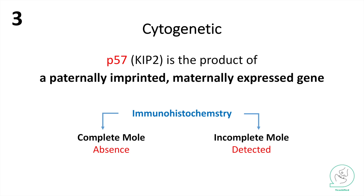Lastly, the cytogenetics. We have P57, which we can detect by immunohistochemistry. P57 is a product of paternally imprinted and maternally expressed genes. In the complete mole we have an empty ovum, which means there is no maternal gene to be expressed — that is why P57 in a complete mole is going to be absent. However, in the incomplete mole, you can detect P57 since the ovum carries a maternal gene.